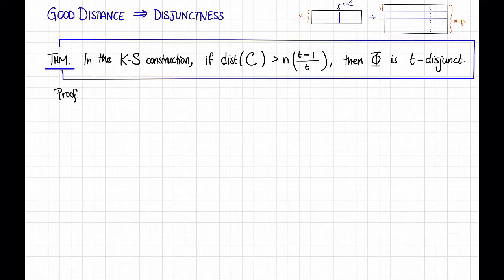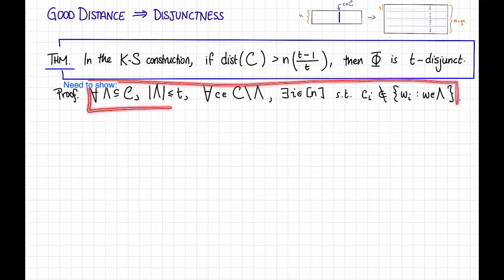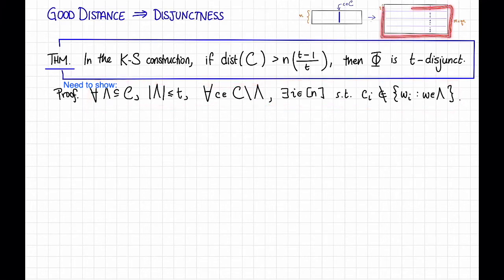So we need to show the following. We need to show that for all lambda subset of C with size at most t, and for all codewords C in my code but not in lambda, there exists some i in the numbers 1 through n so that C_i is not in the set w_i such that w is in lambda. I claim that this is just the translation of the definition of t-disjunctness to this particular construction.